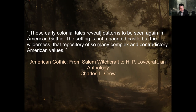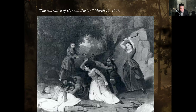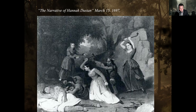These early colonial tales reveal patterns to be seen again in American Gothic. The setting is not a haunted castle, but a wilderness — that repository of so many complex and contradictory American values. One of the enduring images is that of the abduction narrative, going back to the 17th century with things like the narrative of Hannah Dunstan. These could be fairly accurate depictions of a person's experience being abducted by indigenous peoples, or they could be embellished, but they were also considered Gothic narratives — a woman facing dangers, unknown mystery, the wilderness.